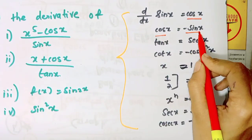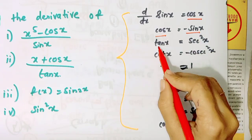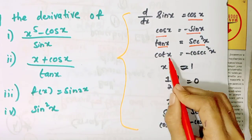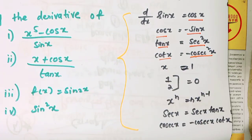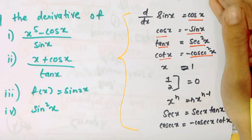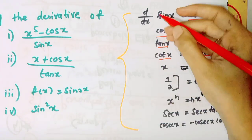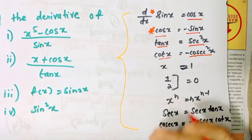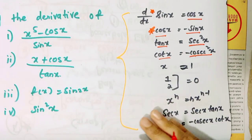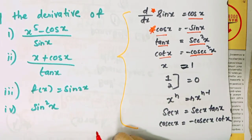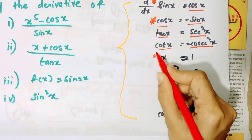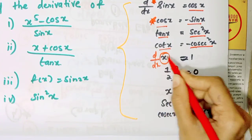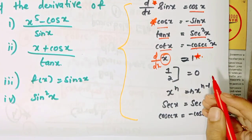The derivative of cos x is minus sin x. Then, d by dx of x is equal to 1. This is very important.